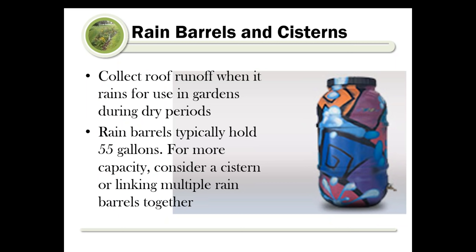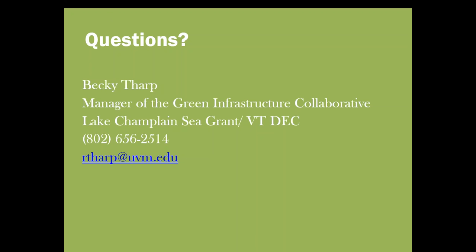Rain barrels and cisterns are a great way to collect rainwater both to direct to your rain garden and to use elsewhere on your property. They can be used in gardens during dry periods, slowing flow to natural water bodies. They typically hold about 55 gallons, but for more capacity consider a cistern - a large rain barrel that can be embedded underground or configured in various shapes and sizes. You can also link multiple rain barrels together for a similar effect. More information is available on the Let It Rain website.